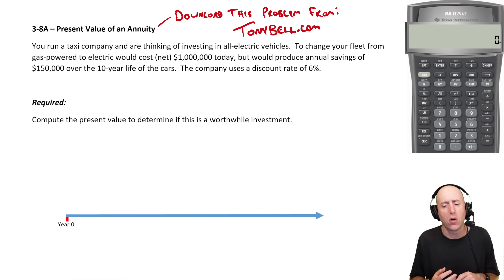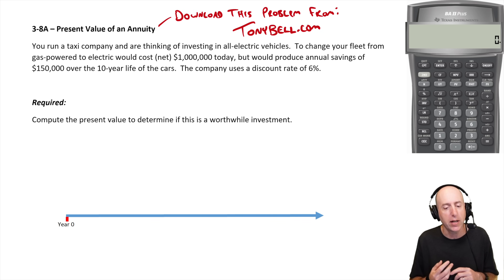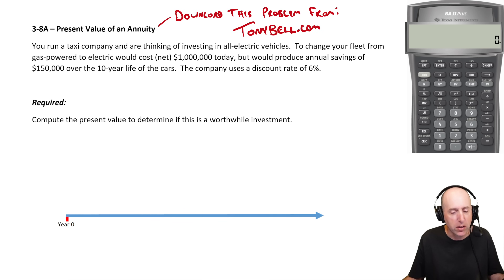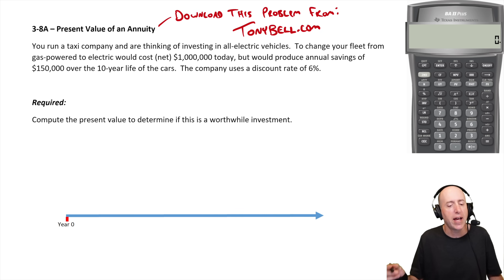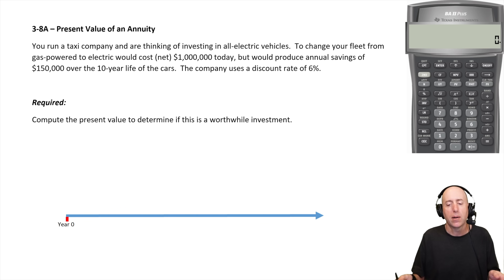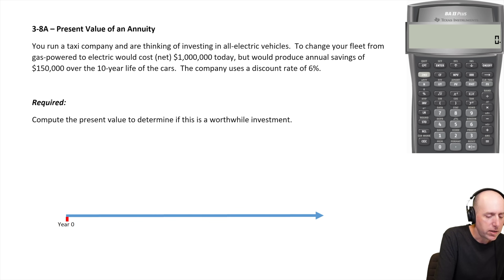You run a taxi company and are thinking of investing in all-electric vehicles. To change your fleet from gas-powered to electric would cost a million dollars today, but would produce annual savings of $150,000 over the 10-year life of the cars. The company uses a discount rate of six percent. So it's going to cost us a million dollars today.